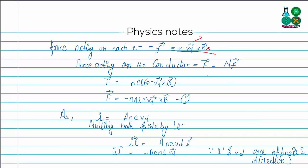The force acting on the whole conductor is capital N times small f. Putting in the value of capital N, the total force equals n times A times L times the electron charge times drift velocity times magnetic field. We know that the current I is equal to n times A times e times Vd.